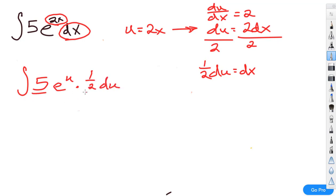Now note that 5 and 1 half, those are both constants, and if I'm multiplying by a constant, I can just move them out in front. So that is now going to become 5 half times the integral e to the u du, which equals, well, what's the antiderivative of e to the u? That is going to be e to the u. Don't forget plus c.